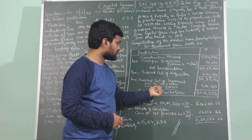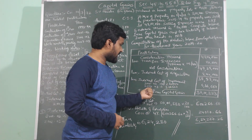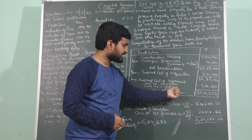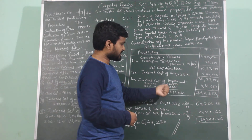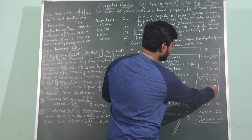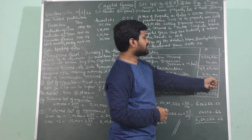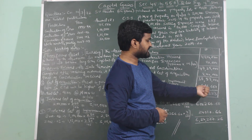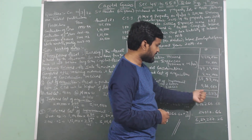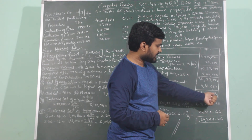Indexed cost of improvement: for 2001-2002 it is Rs. 2 lakhs 80,000, and for 2002-2003 it is Rs. 3 lakhs 6,667. Total indexed cost of improvement is Rs. 5 lakhs 86,667. Subtracting Rs. 5 lakhs 86,667 from Rs. 38 lakhs 88,000 gives Rs. 33 lakhs 1,333, which is the income from capital gain.